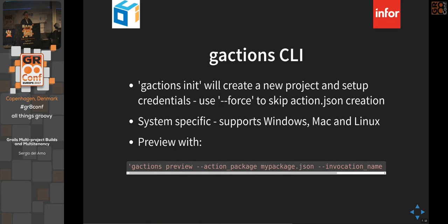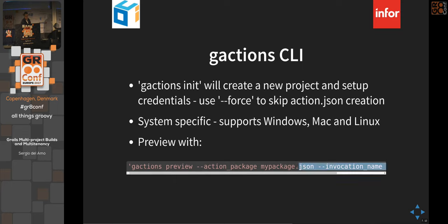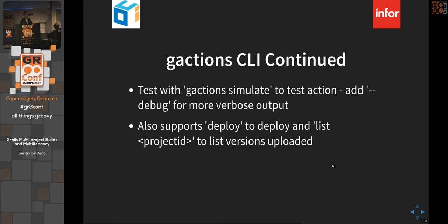The gactions CLI: run 'gactions init' — it asks for credentials and creates a sample action.json metadata file with your intents. Run 'gactions preview' with a package name and invocation name to temporarily test without deploying to the console. You can also run 'gactions simulate' to create a text-based simulator, or deploy to a live system with 'gactions deploy' after going through the approval process.